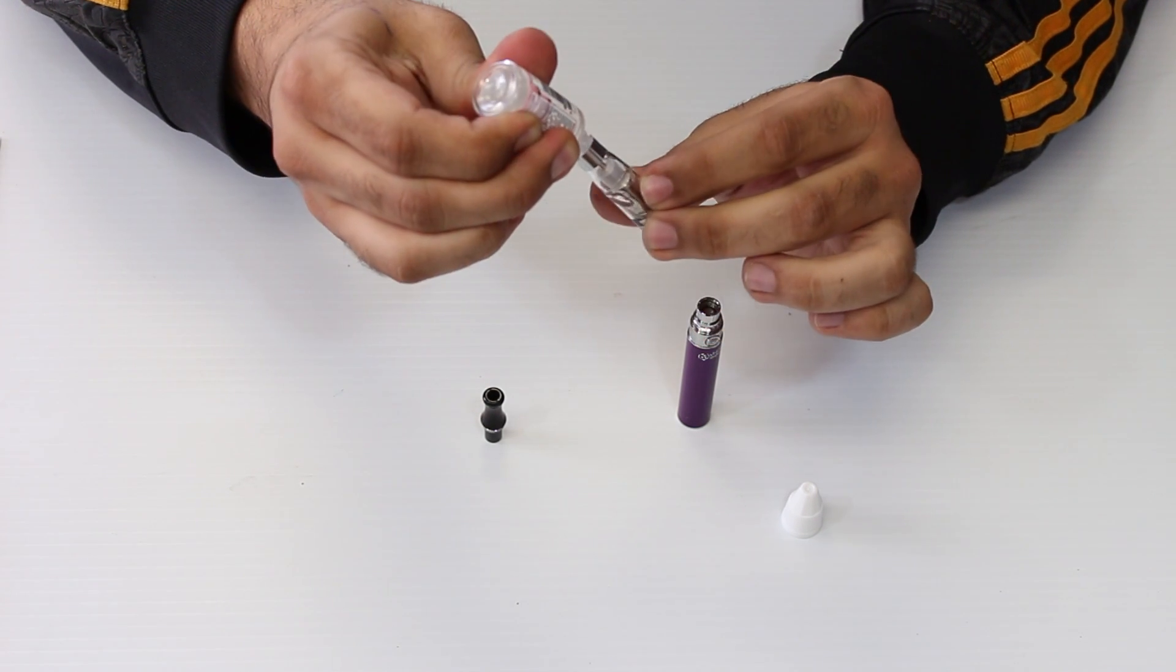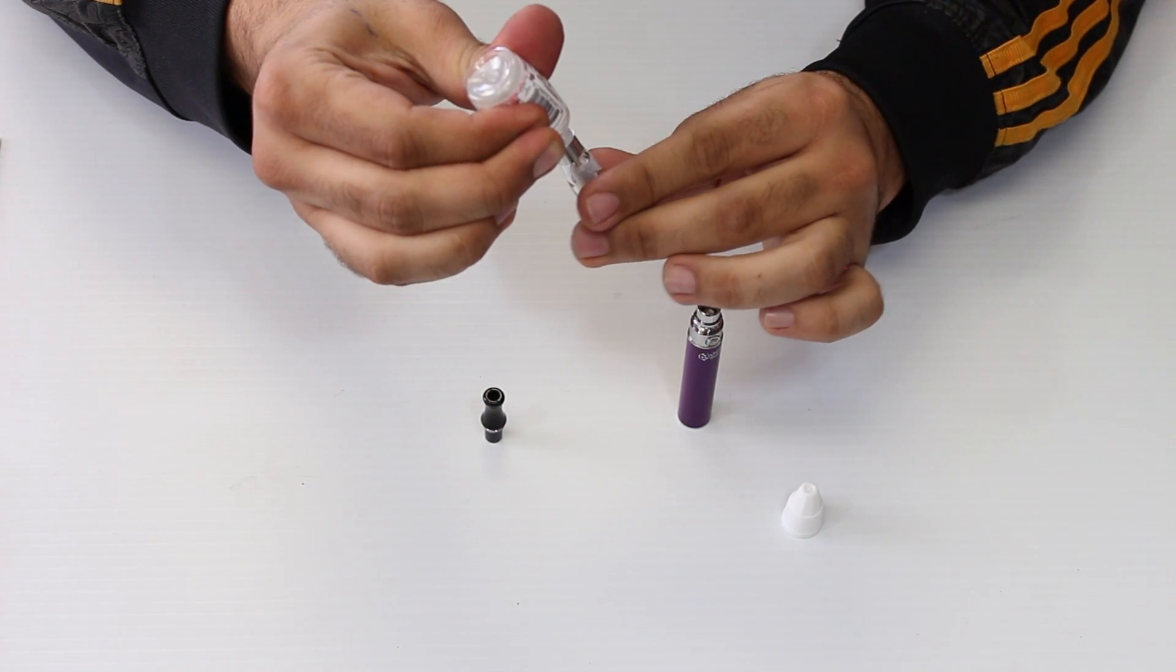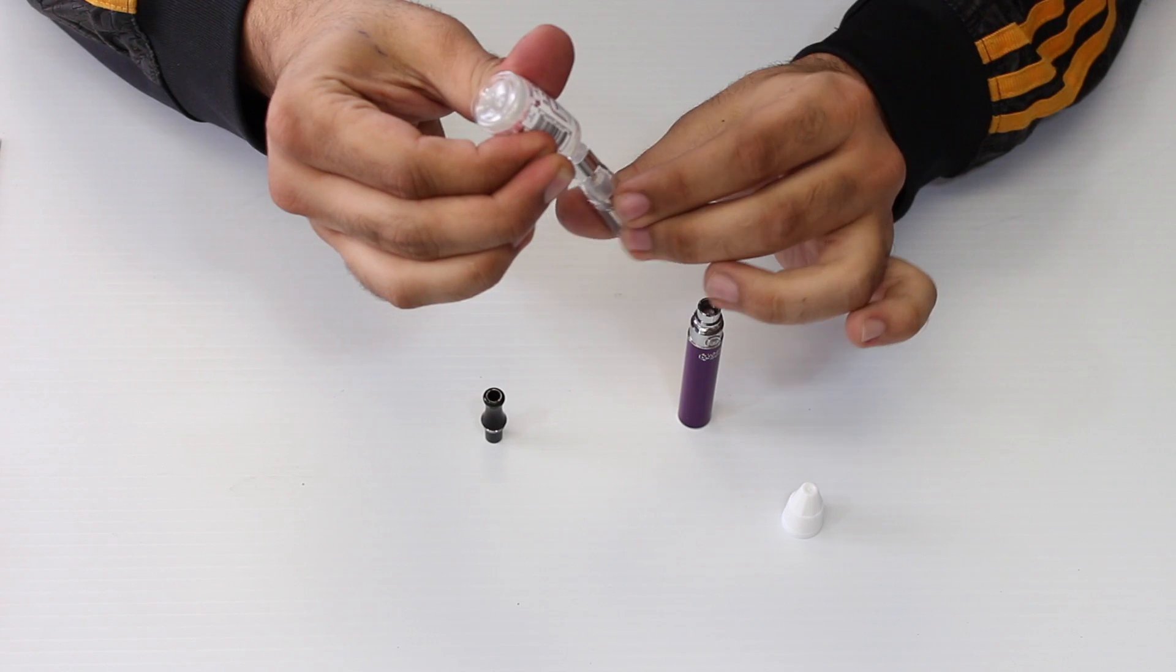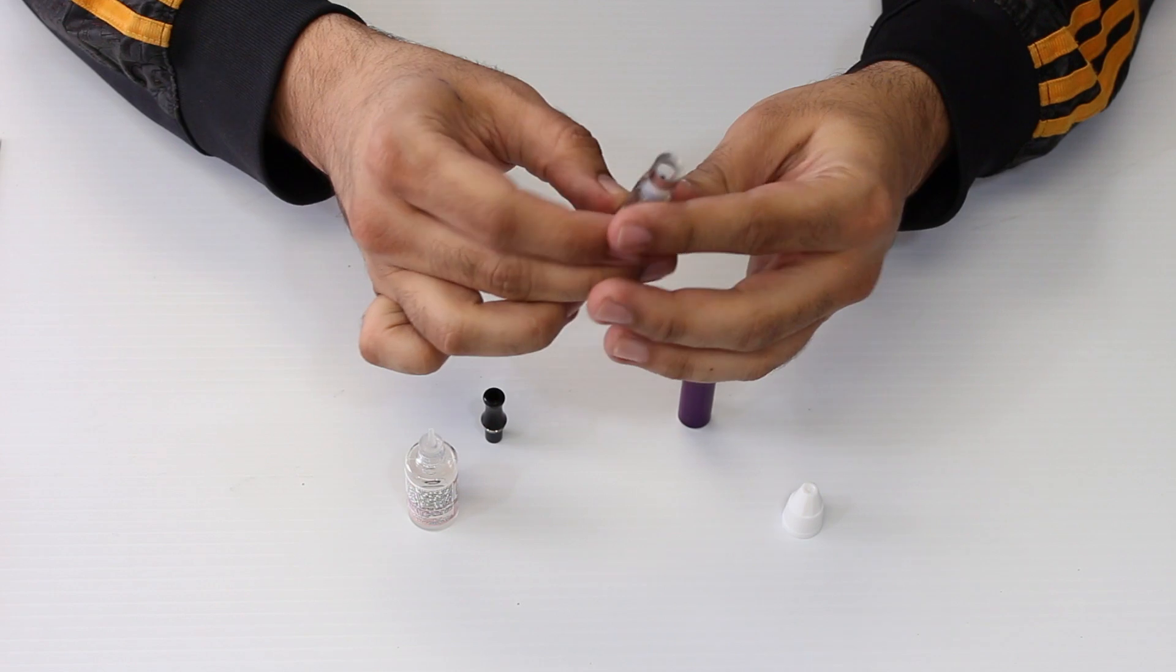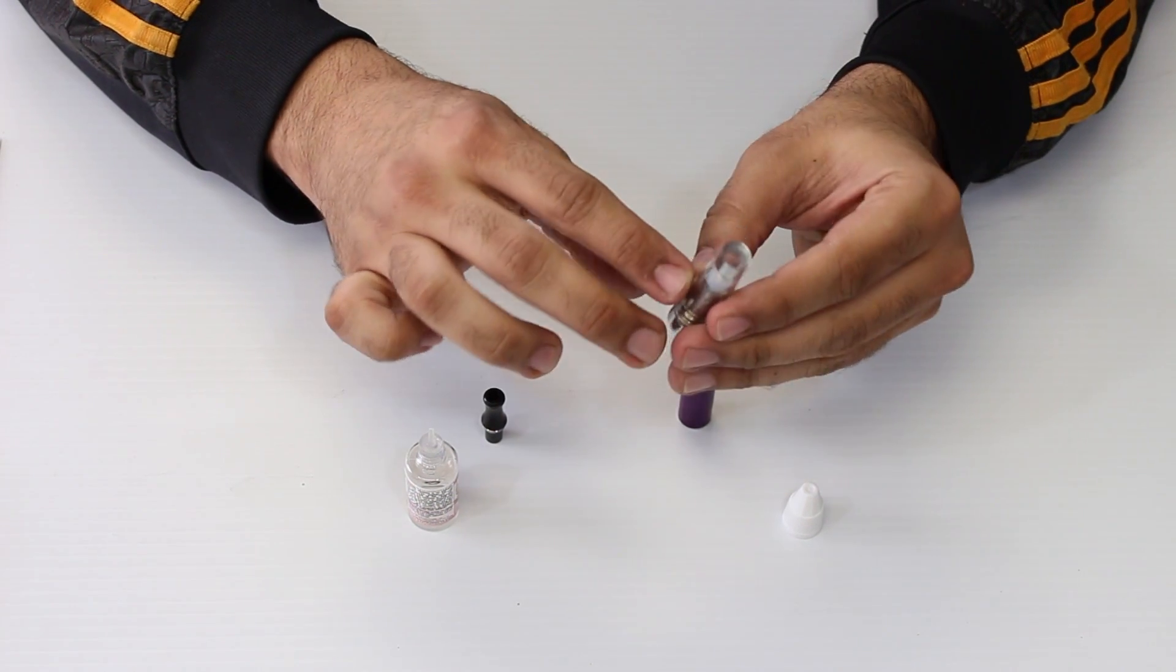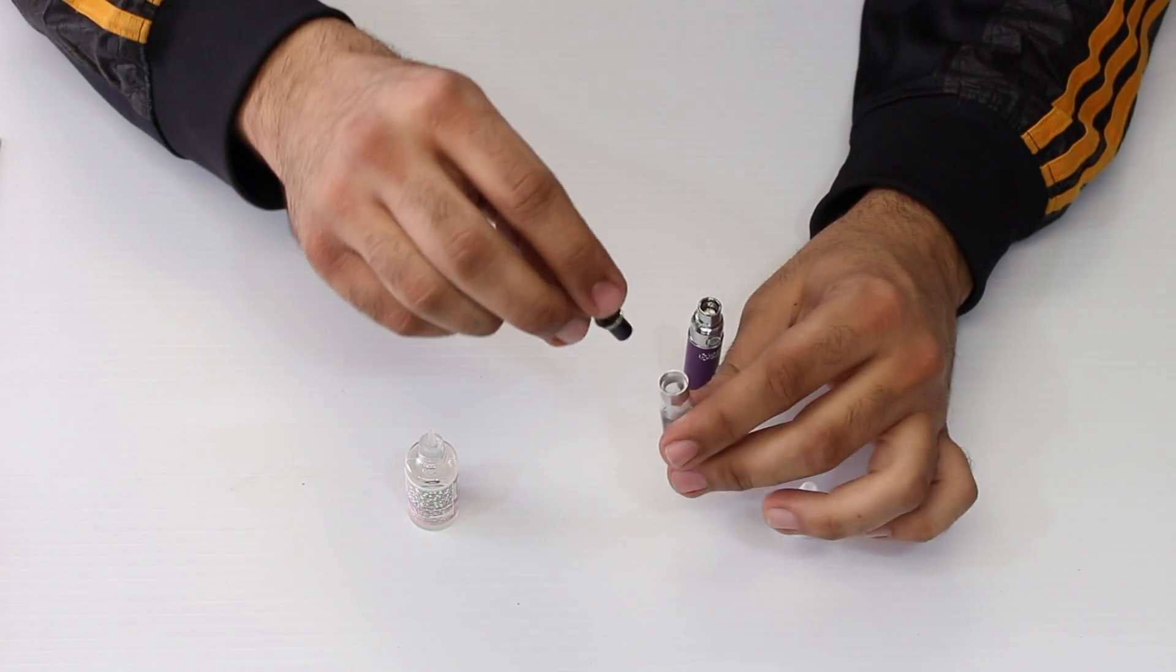Make sure you don't overfill it. I actually did overfill it a little, but I would recommend - you'll see the line down here, the 1.6 ml - fill it to there. That way to prevent any of the juices from going into your mouth while inhaling.